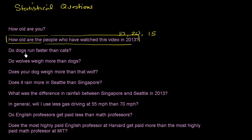Do dogs run faster than cats? There are many dogs and many cats, and they all run at different speeds. Some dogs run faster than some cats, and some cats run faster than some dogs. We would need statistics to get a sense of, in general or on average, how fast dogs run compared to cats. We could compare those averages or medians. This is definitely a statistical question.